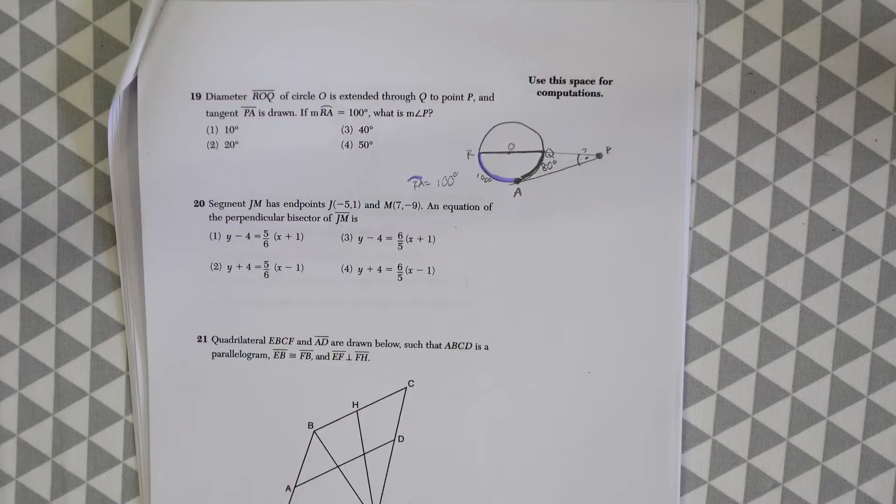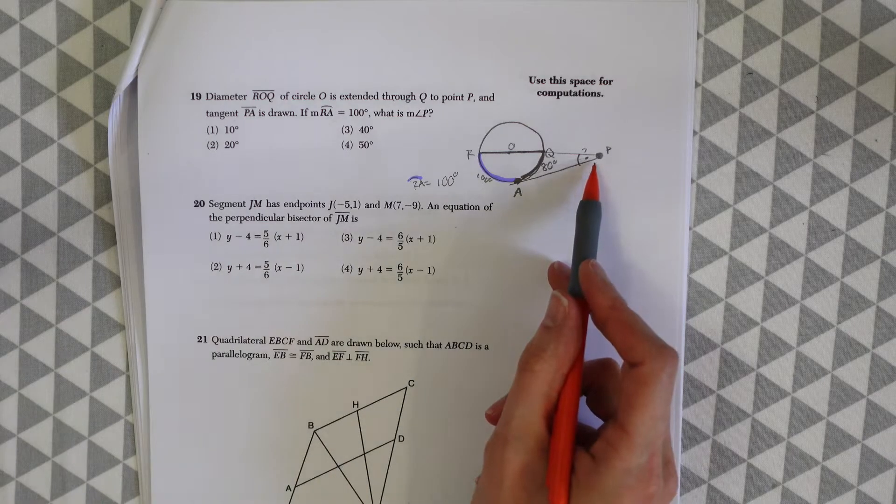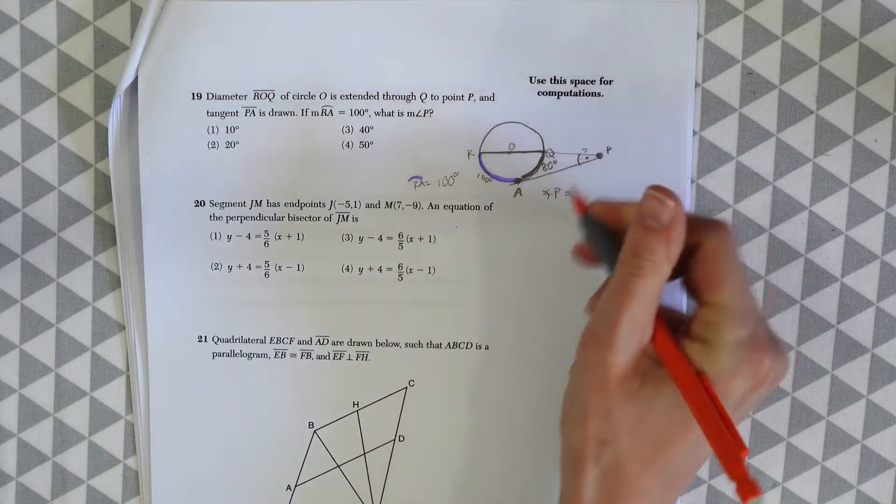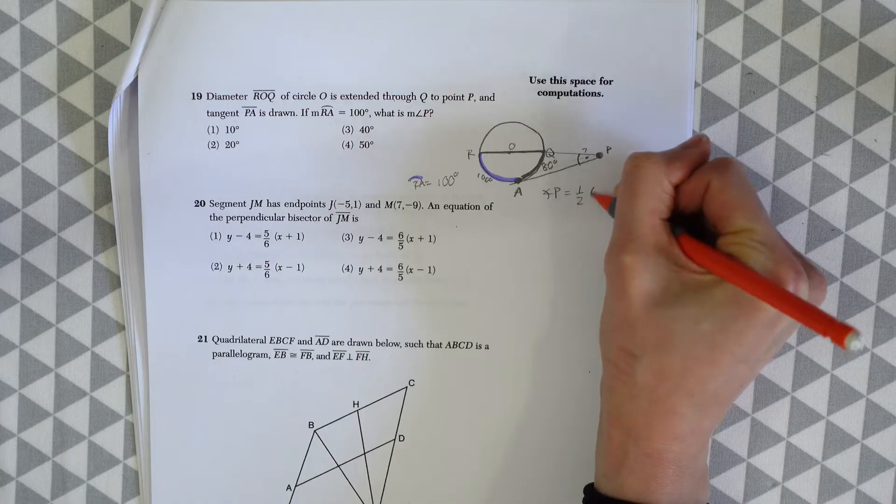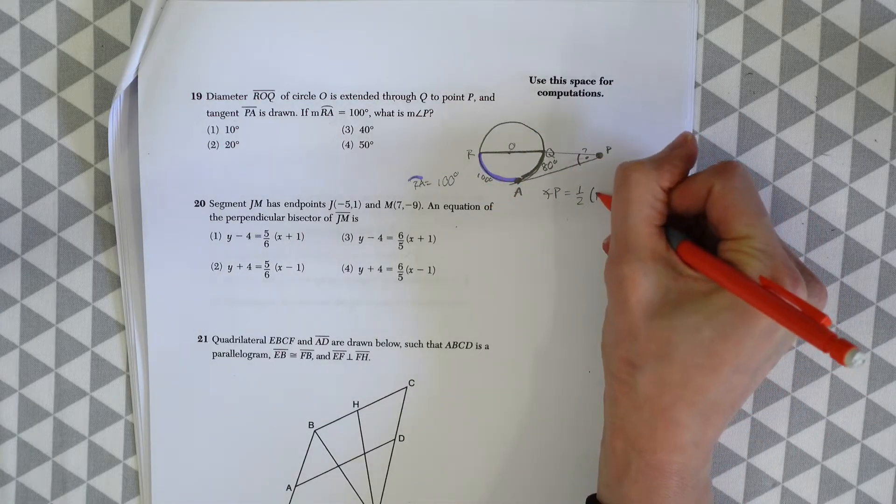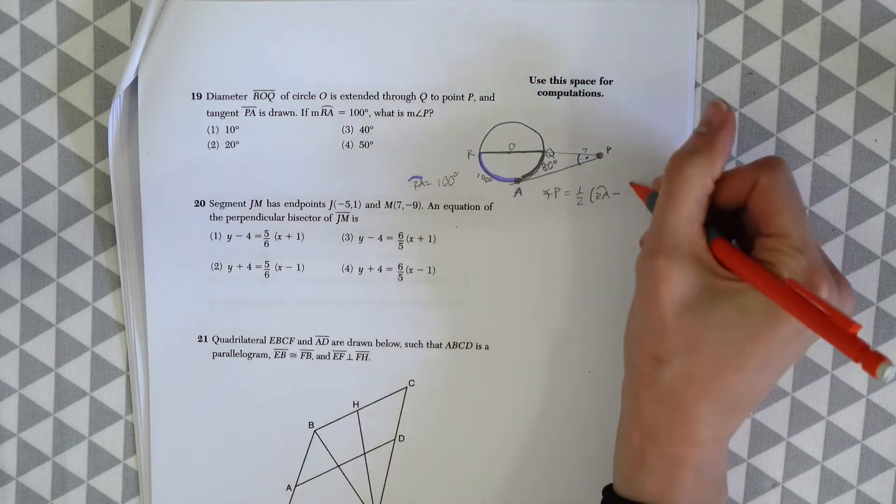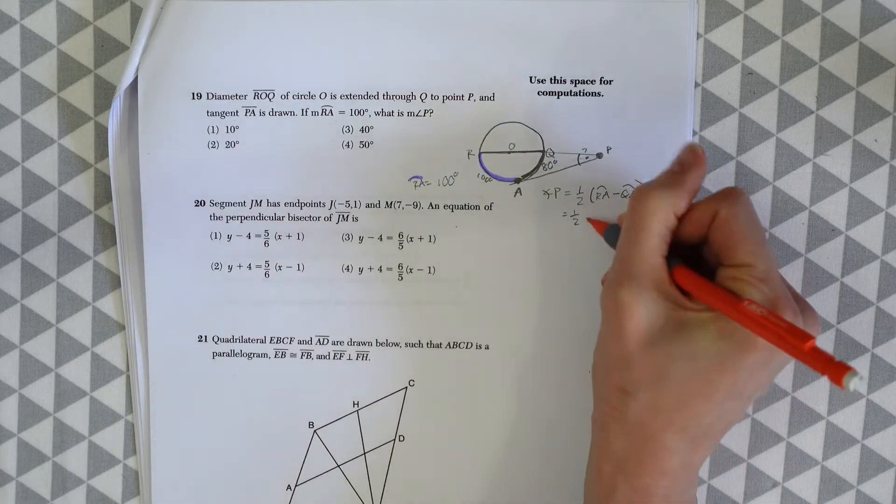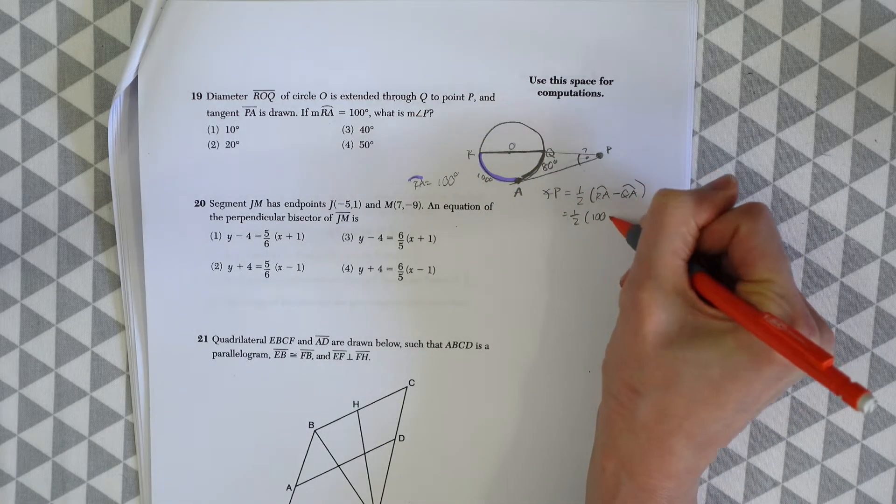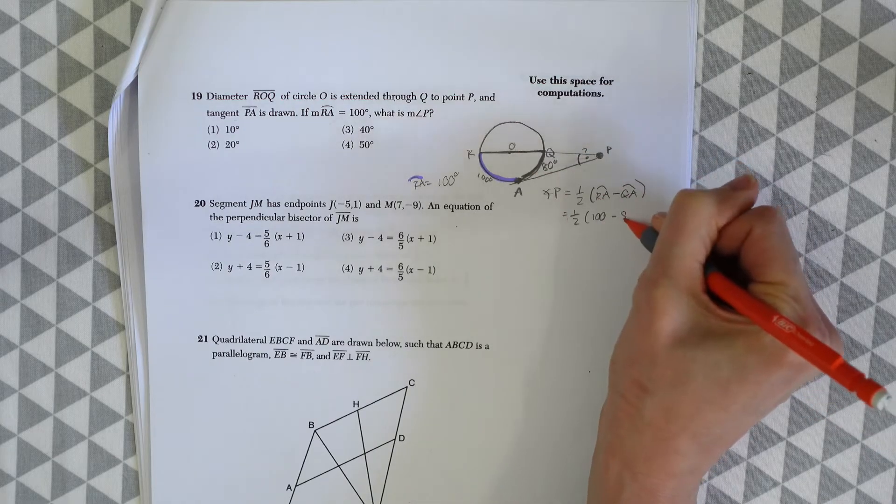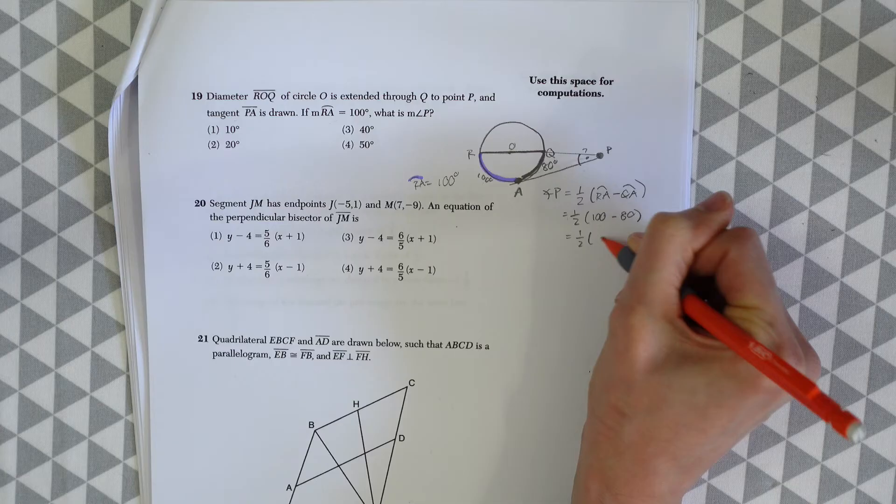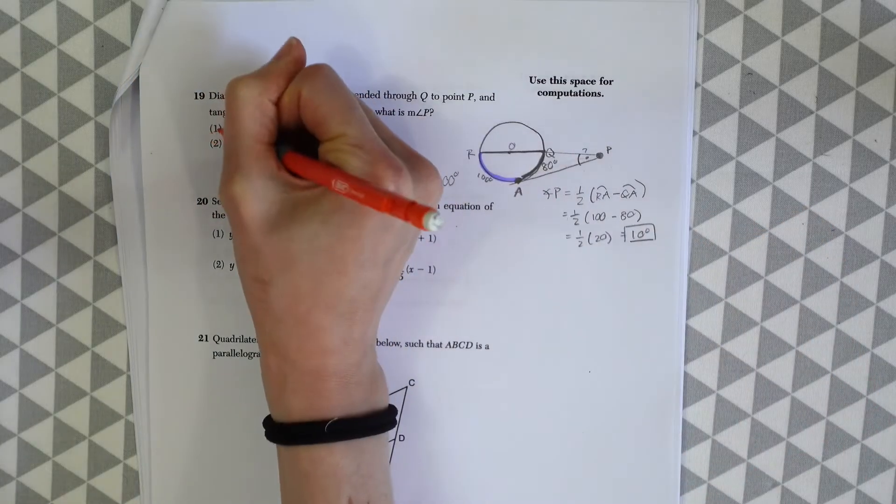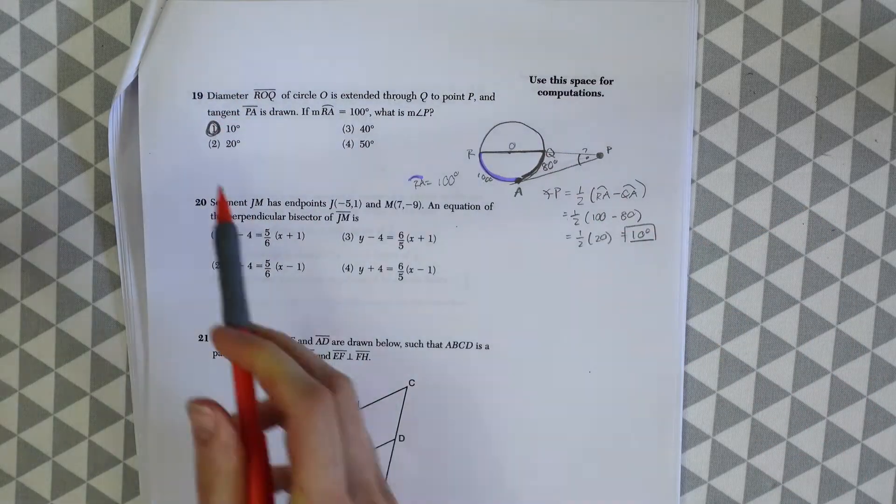To find angle P, we use a formula for an angle connected to a secant and tangent. Angle P equals half of the big arc RA minus the little arc QA. We have RA is 100 minus QA which is 80. 100 minus 80 is 20, and half of that equals 10. So the answer is 10 degrees, choice one.